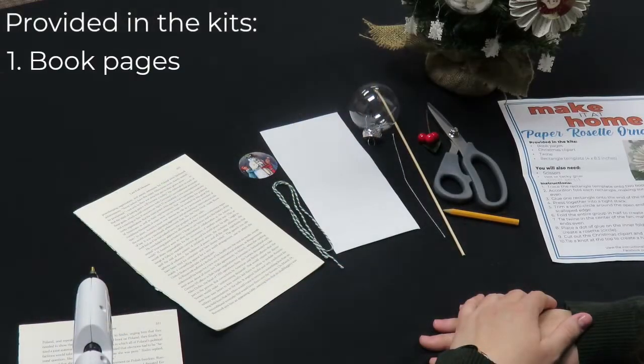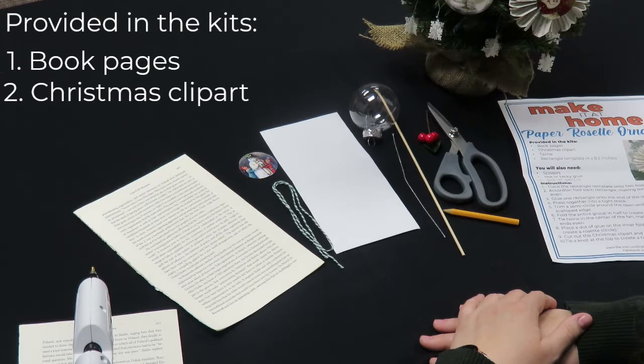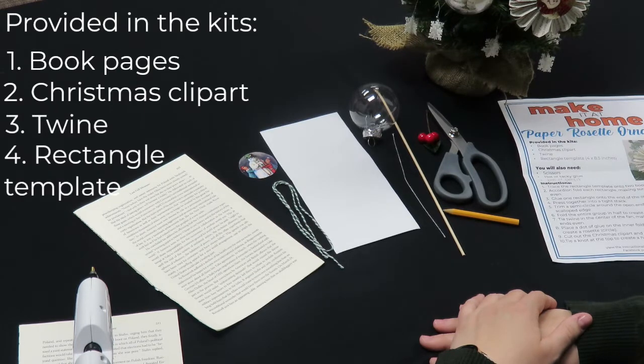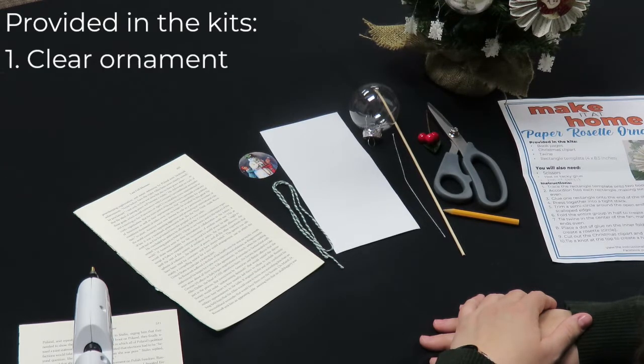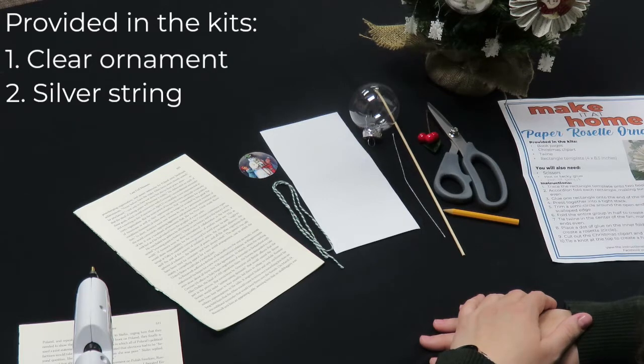Provided in the kits are book pages, Christmas clip art, twine, a rectangle template, a clear ornament, silver string, poly sprig, and a skewer.